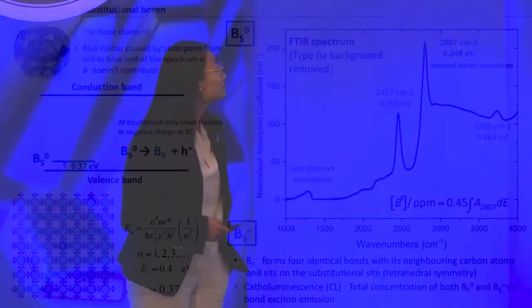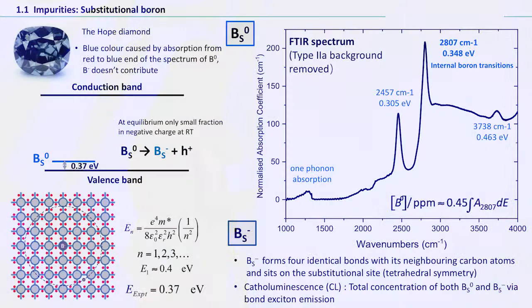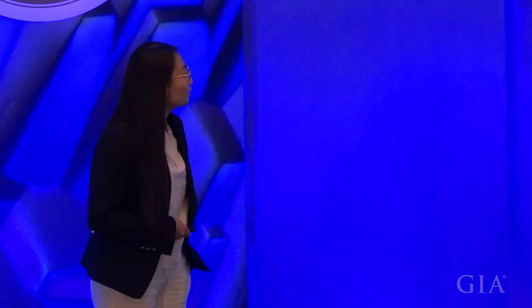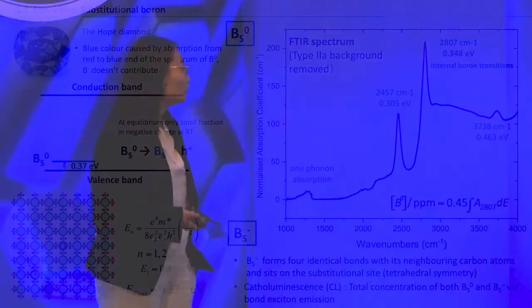There is a question: could the nitrogen minus get involved in the luminescence we observe in diamond? In terms of boron, at room temperature most of the boron will sit in the neutral charge state and contributes to the beautiful blue color in diamond, and only a very small fraction will stay in the negative charge state at room temperature. Boron is a well-known shallow acceptor whose energy level is just about 0.37 eV above the top of the valence band. The FTIR spectrum gives us a good way to know the concentration of boron in both charge states.